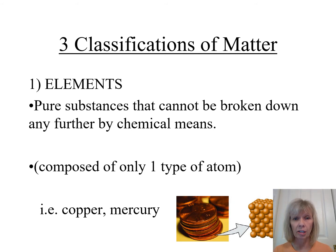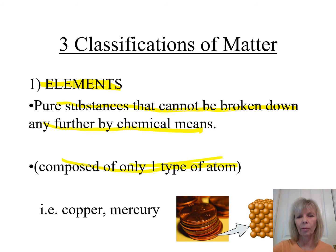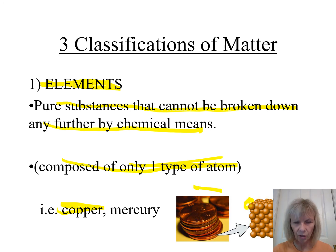Now we'll look more closely at elements, compounds, and mixtures, starting with elements. An element is a pure substance that can't be broken down further by chemical means. Elements are composed of one type of atom — the smallest particle that still behaves like that element. An example is copper, which is what pennies are made of; broken down to the smallest piece, these individual spheres are copper atoms. Mercury is another element — a silver liquid at room temperature.